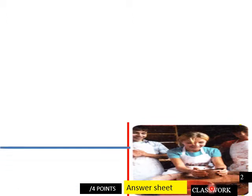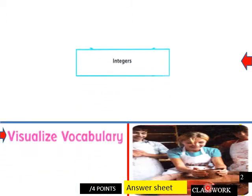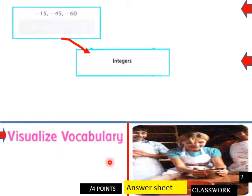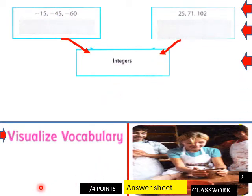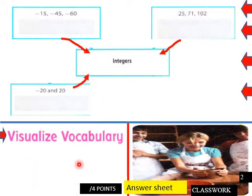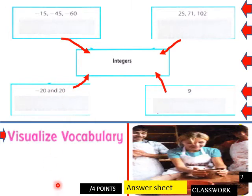Page two classwork. Visualize vocabulary. So we have integers here. Integers. These are integers. What kind of integers are those? And then what kinds of integers are these? And then what kind of integer is that?